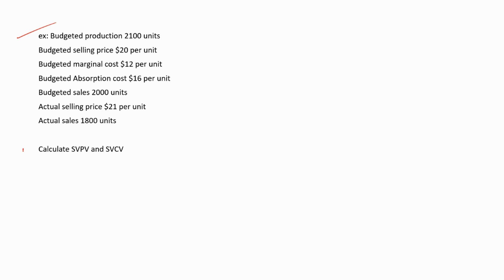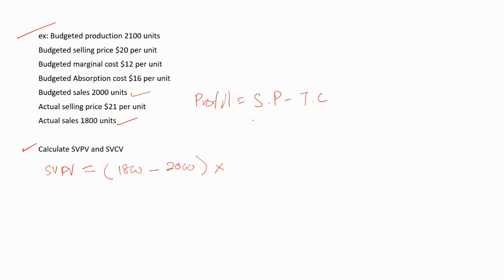Now let's calculate the sales volume profit variance and sales volume contribution variance. For SVPV: actual sales units of 1,800 minus budgeted sales units of 2,000, multiplied by the standard profit per unit. Profit equals selling price minus total cost per unit, so using budgeted values: budgeted selling price of $20 minus budgeted absorption cost of $16 equals $4 standard profit per unit. Therefore, SVPV = (1,800 − 2,000) × $4 = −$800, which means $800 adverse.